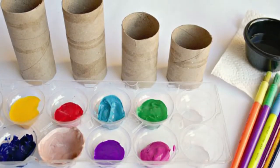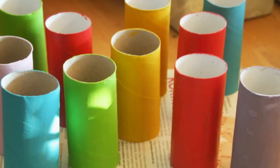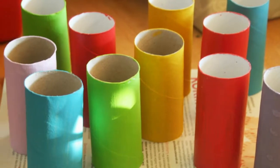Directions for homemade kaleidoscope. First step: If you're planning on painting your cardboard tube, do that first. We use our favorite tempera paint. Set it aside to dry.